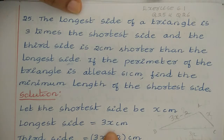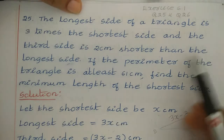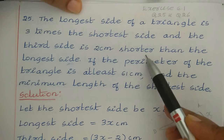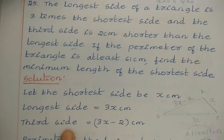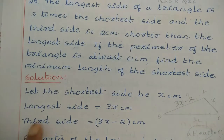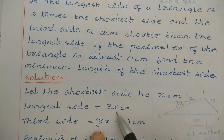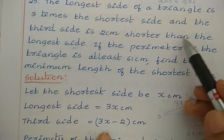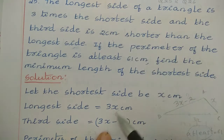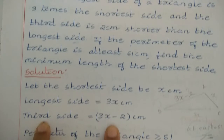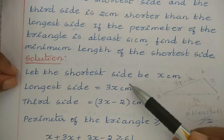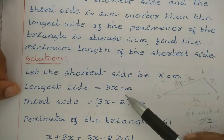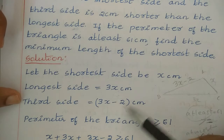So the longest side is 3x and the shortest side is x. Then the third side is 2 cm shorter than the longest side. The longest side is 3x, and the third side is 2 cm shorter than this, so the third side is 3x minus 2 cm. Now we have all three sides: shortest side x cm, longest side 3x cm, and third side (3x − 2) cm.